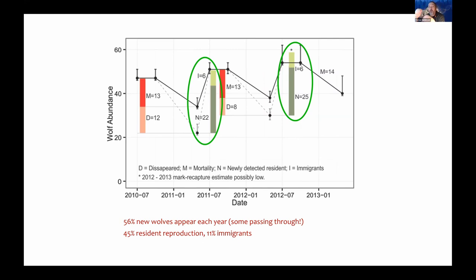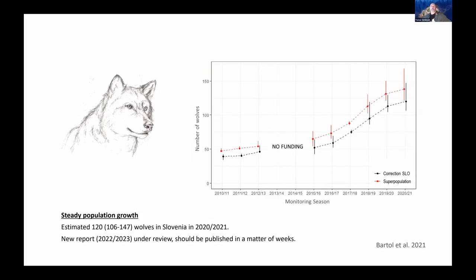We observed similar high turnover and high dynamics in the population as we continued with the monitoring. There was a little break when we ran out of funding, switching from LIFE funds to national funding. The population kept growing — it's now almost three times the size of what it was when we started. The growth seems to follow the sigmoid population growth curve expected from population ecology theory, and as population expansion slowed down, population growth slowed down as well.